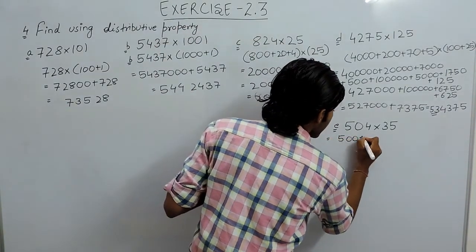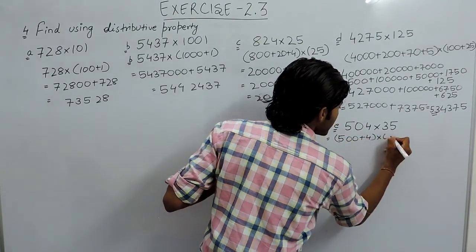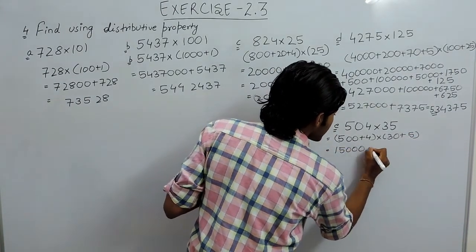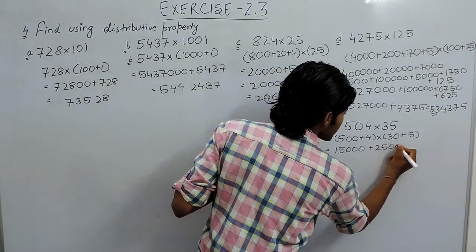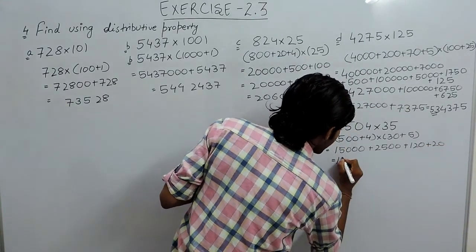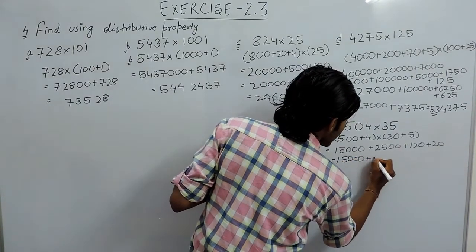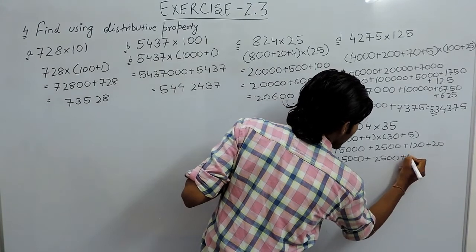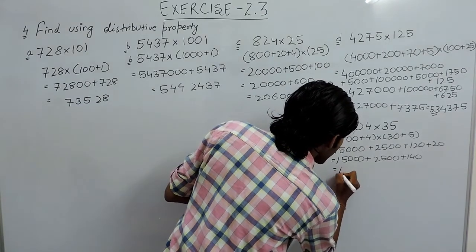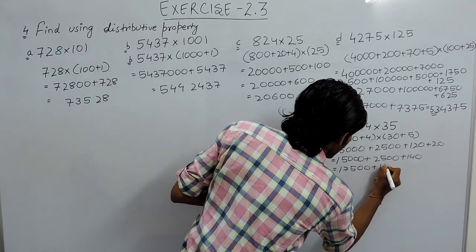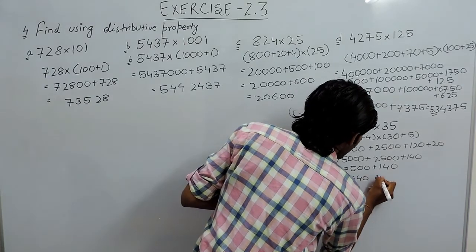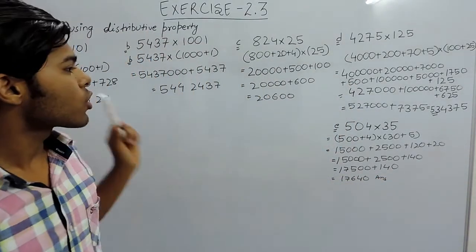And in the last part we can write this to be 500 plus 4 multiplied with 30 plus 5. So on multiplication, 5 times 3 is 15 with 3 zeros plus 5 times 5 is 25 with 2 zeros plus 4 times 3 is 12 with 1 zero plus 20. So this will be 15000 plus 2500 plus 140. First we will add 2500 to 15000, that will be 17500 plus 140, and the required answer will be 17640.